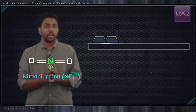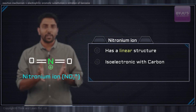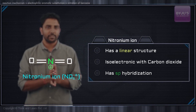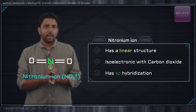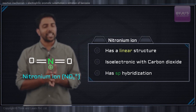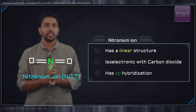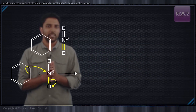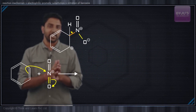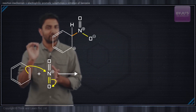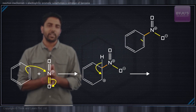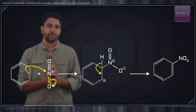This is called the nitronium ion and it has a linear structure. In fact, NO₂⁺ is isoelectronic with carbon dioxide, and the central nitrogen atom is sp-hybridized, just like in the case of carbon dioxide. This atom is attacked by the benzene ring, and in the very final step, the proton gets removed, restoring the aromaticity.